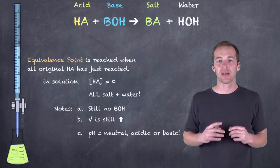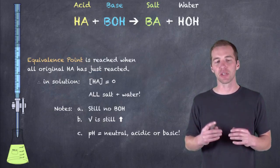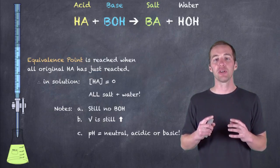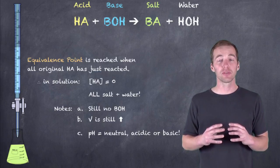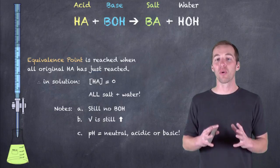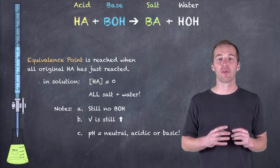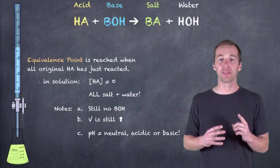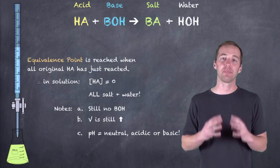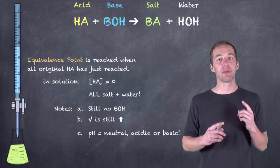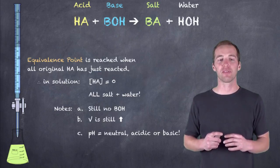The volume has increased significantly from when we first started the titration, and — importantly — the pH could either be neutral, basic, or acidic. We're going to take a look at why that might be in a subsequent vodcast, but keep note of this: the pH at the equivalence point does not have to be neutral. Even though there may be no excess acid or base, it doesn't mean that the solution itself is neutral.